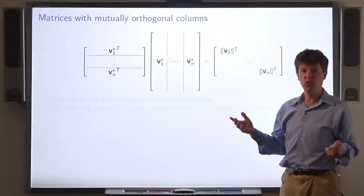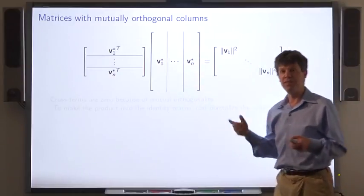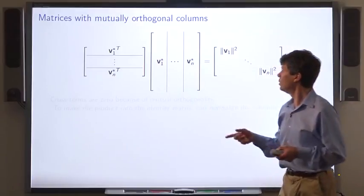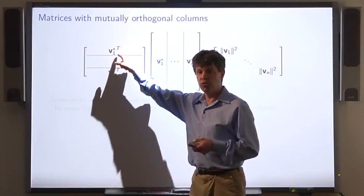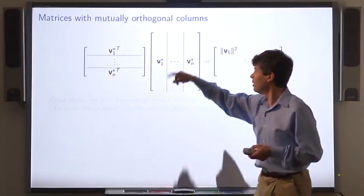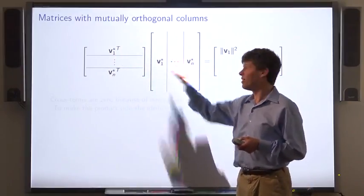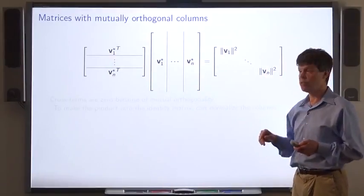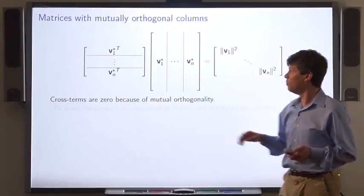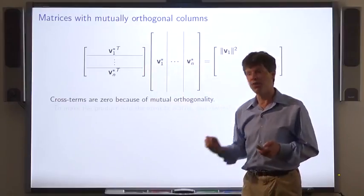Why is that? Well, let's use one of our definitions of matrix-matrix multiplication. The entry of the product in the first row in the first column is the dot product of the first row of the first matrix times the first column of the second matrix, and so on. The off-diagonal elements are all zero because these vectors are mutually orthogonal.